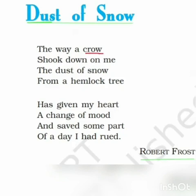Now, why has the poet taken the crow and the hemlock tree as an example? I'm sure you all know that a crow represents a bad omen. And what is hemlock? Hemlock is also a tree which has white colored poisonous flowers. So why has the poet taken this crow and a hemlock tree as an example?